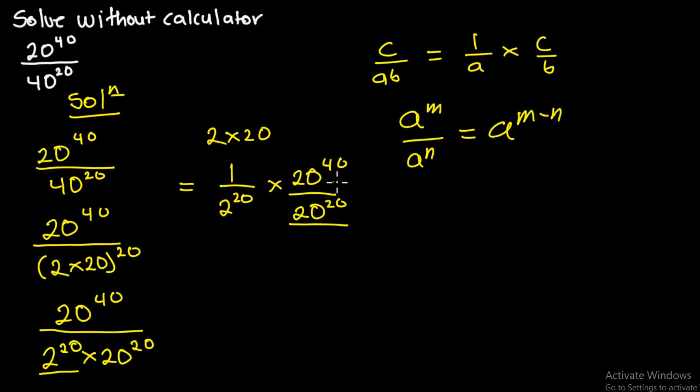Now you are going to apply the same thing over here. So we are going to have 1 over 2 to the power 20 times 20 to the power 40 minus 20. From here I will have 1 over 2 to the power 20 times, then 40 minus 20 is going to give us 20.